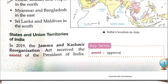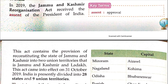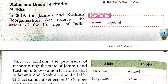States and Union Territories of India — meaning Rajya and Union Territories. In 2019, the Jammu and Kashmir Reorganization Act received the assent of the President of India. In 2019, Jammu and Kashmir was divided into Jammu and Kashmir and Ladakh. The Act contains the permission of reconstituting the state of Jammu and Kashmir into two Union Territories, that is Jammu and Kashmir and Ladakh.